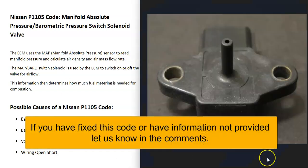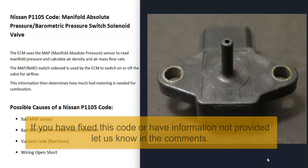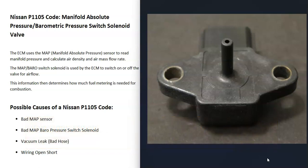What does this mean? There's a manifold absolute pressure sensor, or MAP sensor, that reads the manifold pressure, and the computer uses this to measure air density and in some cases the air going into the engine. It can be used with a mass airflow sensor or by itself — it really depends on the Nissan year and make.